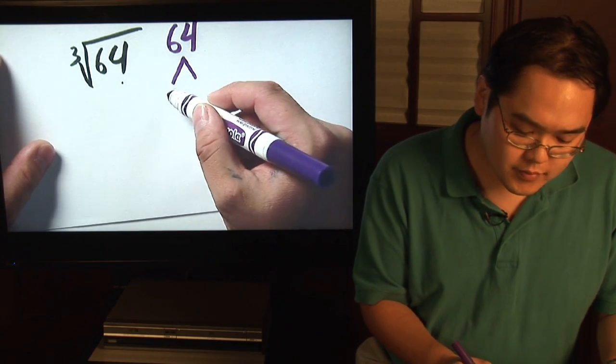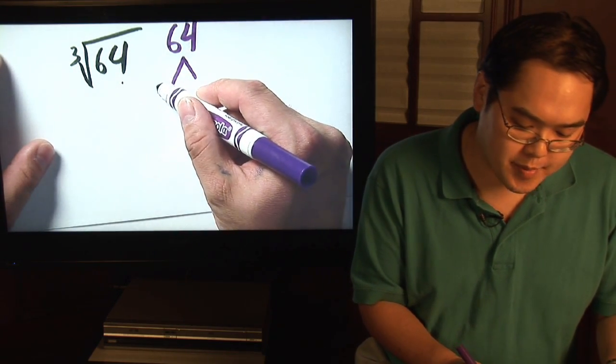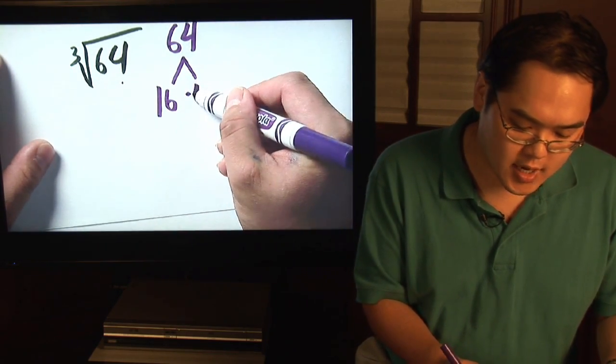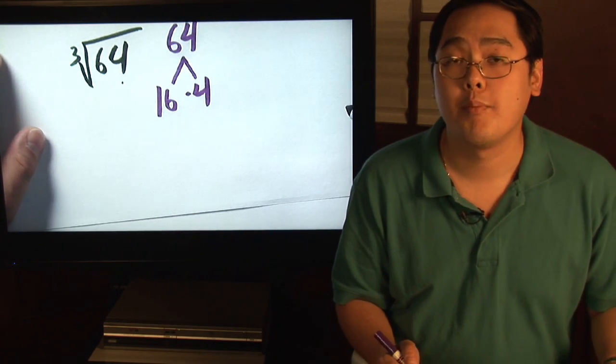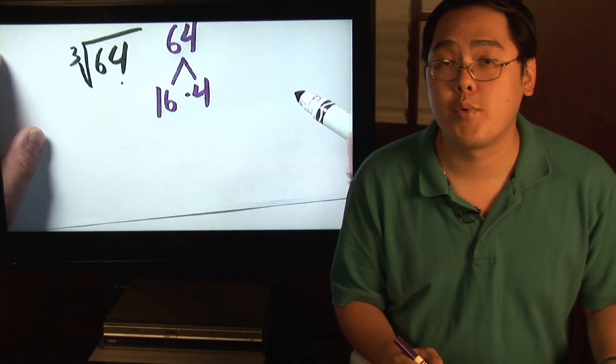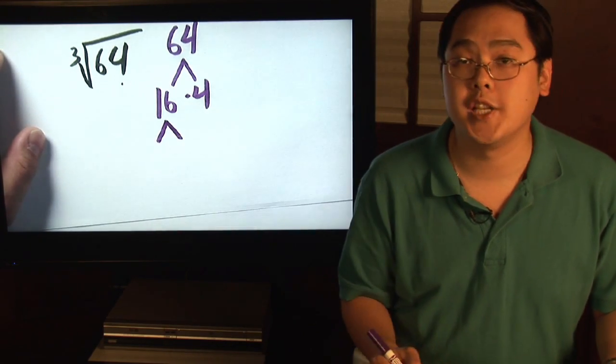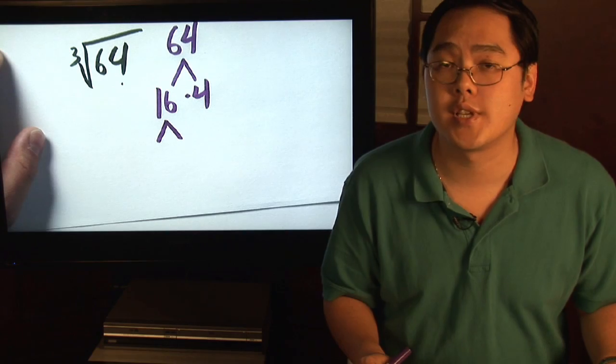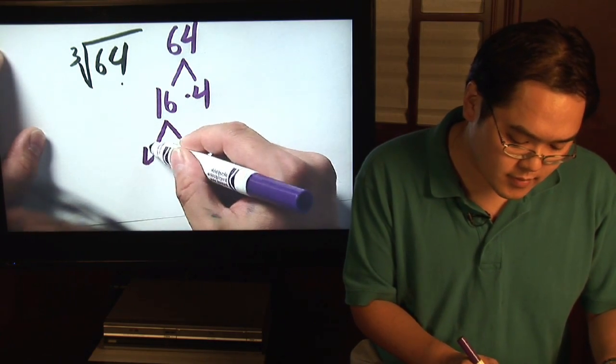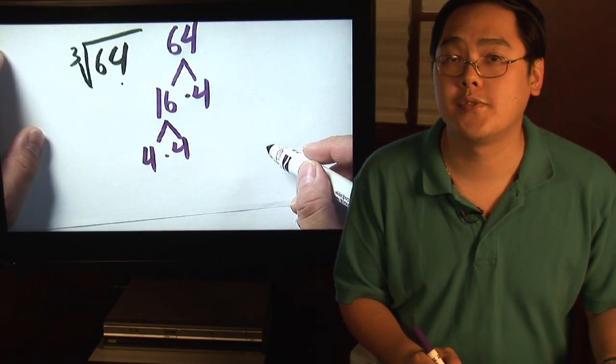64, for example, can be broken up as 16 times 4. 4 is pretty easy. You can break 4 up if you want to as well, but you know 16 for sure needs to be broken up. Two common numbers that multiply to give you 16 is 4 times 4.